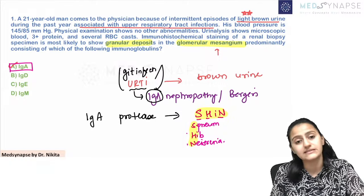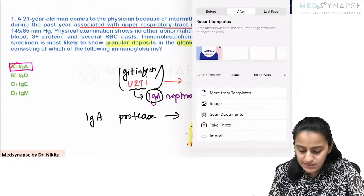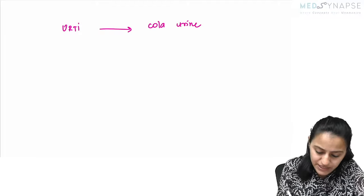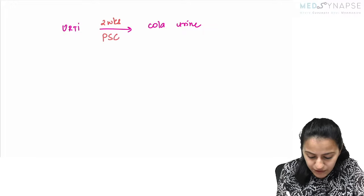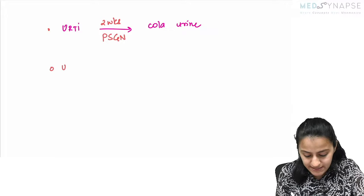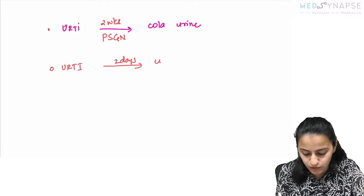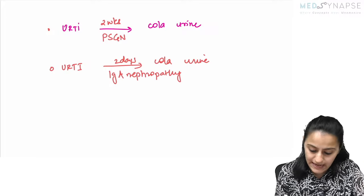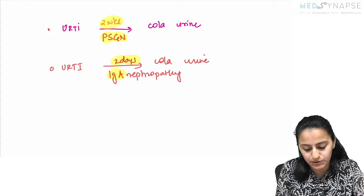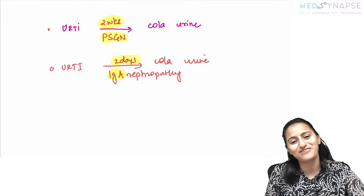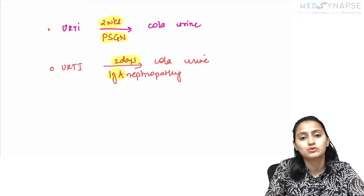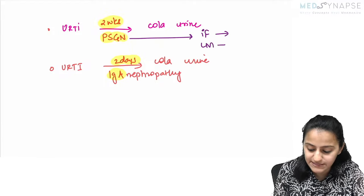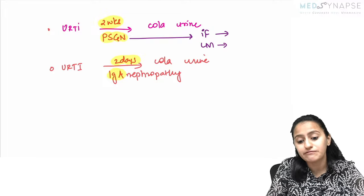This is IgA nephropathy, so the deposit is IgA. Now, what is the other condition where you have a URTI followed by cola-colored urine? If it is after two weeks, it is post-streptococcal glomerulonephritis (PSGN). If the URTI is followed by cola-colored urine within two days, it is IgA nephropathy. This point is very very important — IgA nephropathy is within two days; post-streptococcal glomerulonephritis is after two weeks.